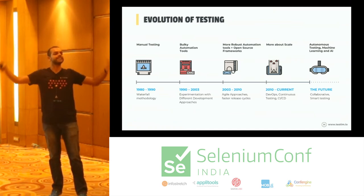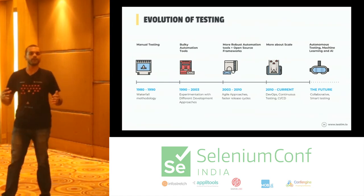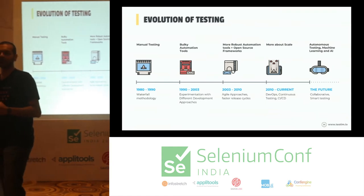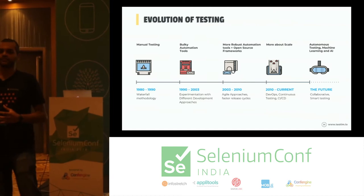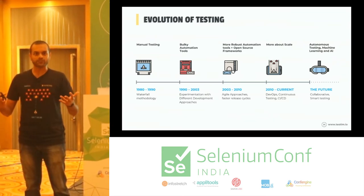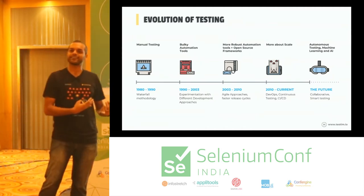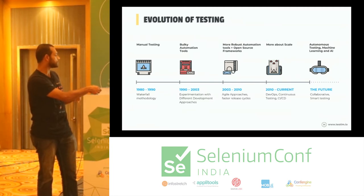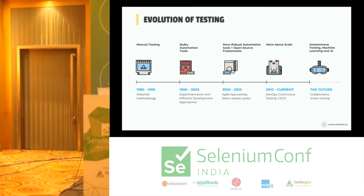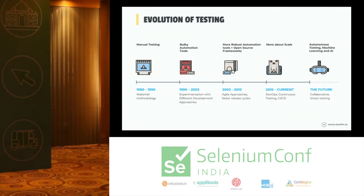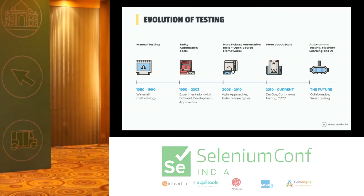The 2003 to 2010 period was the period of innovation. Open source frameworks started during that time — a group of like-minded people wanted to solve software testing problems, and Selenium is one example. We also saw Agile become huge, with Scrum and XP. People wanted to release software fast, find bugs faster, and release really, really fast.